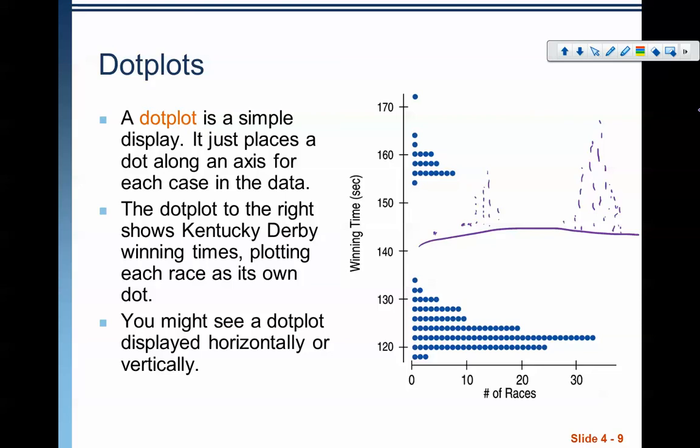All right, we have one more display that we use. It's called a box and whisker plot. But we have some things that we need to learn about before we do that. So that one's going to be held off. And I think actually we hold off on that one until the next chapter. So that's going to be in Chapter 5. There is one more, but it's in Chapter 5 that we look at it.